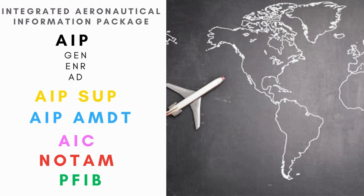Some of the information is static, like runway directions, frequencies, holding point coordinates. Some of them are dynamic — temporary runway closures, volcano activity, high obstacles erected. Some information might announce regulations or permanent changes; some must be inserted into flight management systems in advance. That's why they are grouped into different names, and all of them gathered together are named the Integrated Aeronautical Information Package.